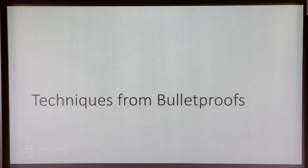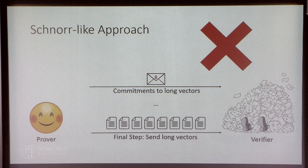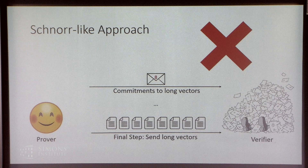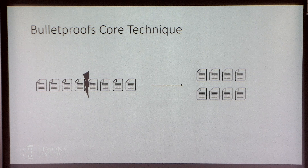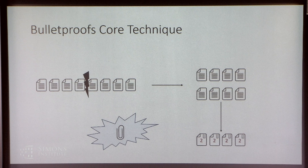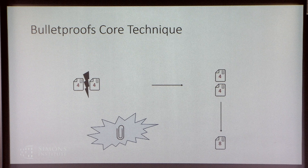Now let's look at using bulletproof techniques. For a proof of knowledge of a commitment to a very long vector, the Schnorr-like approach would send a response vector the same length as the original secret — potentially very long, giving large proof sizes. Instead, in the discrete log bulletproofs protocol, we take the long vectors, chop them in half, and magically combine the two halves into one short vector — a reduction to a smaller problem. We can repeat this again and again until the prover can just send a short commitment opening to the verifier, giving logarithmic proof size in the length of the original vector.